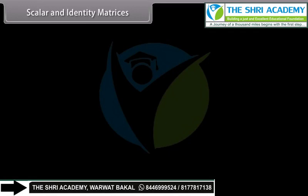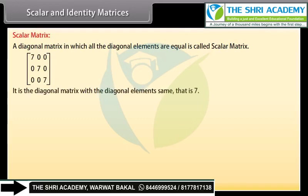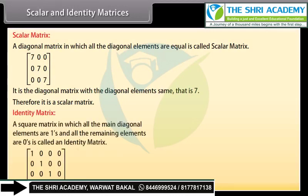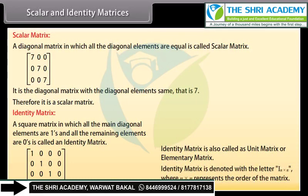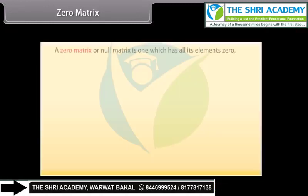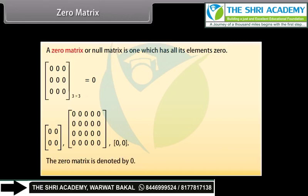Scalar and identity matrix. A diagonal matrix in which all the diagonal elements are equal is called a scalar matrix. Look at this matrix — it is a diagonal matrix with all diagonal elements the same, that is, 7. Therefore, it is a scalar matrix. A square matrix in which all the main diagonal elements are 1s and all remaining elements are zeros is called an identity matrix, also called a unit matrix or elementary matrix. It is denoted by I with order N by N. A zero matrix, or null matrix, has all its elements zero. It is denoted by O.